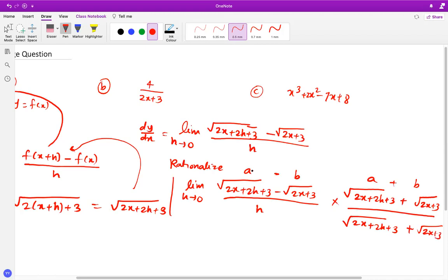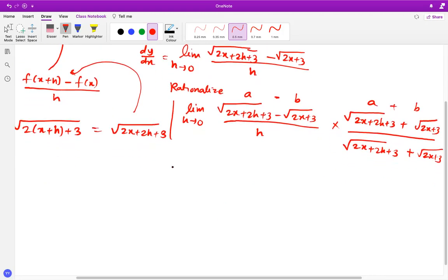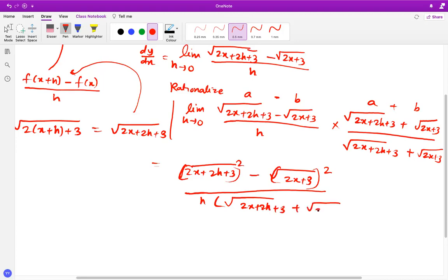Now, since we all know that a minus b, a plus b is a square minus b square, what we get is eventually, this is a, so root of 2x plus 2h plus 3, the whole square, so here the root disappears actually, and then root 2x plus 3, the whole square, over h times this, root 2x plus 2h plus 3, plus root 2x plus 3.